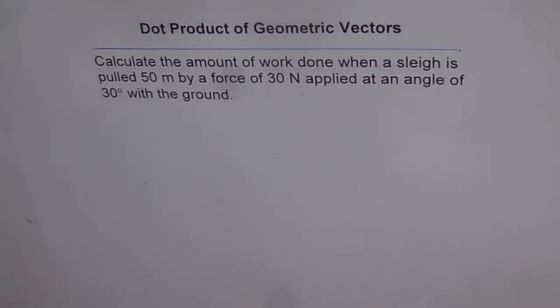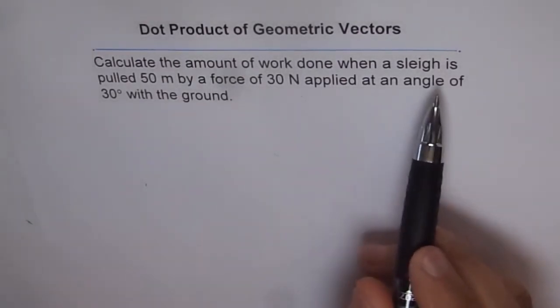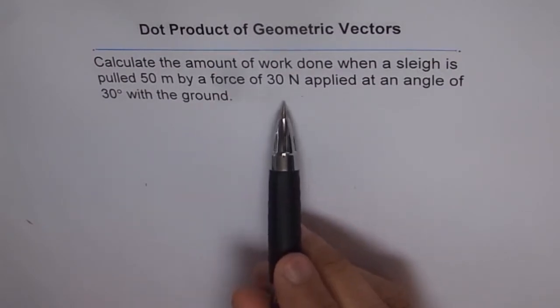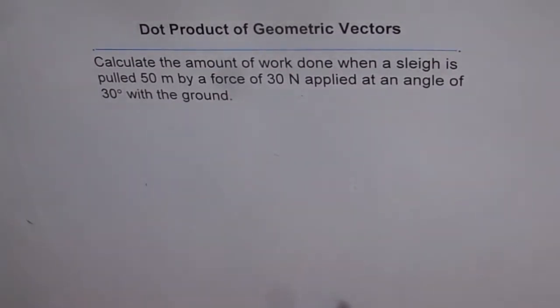Here is an application of dot products. Calculate the amount of work done when a sledge is pulled 50 meters by a force of 30 newtons applied at an angle of 30 degrees with the ground.